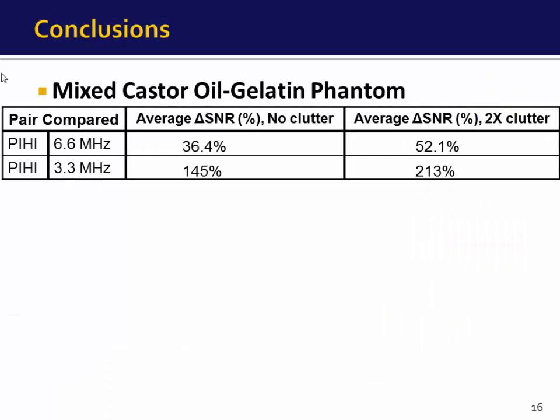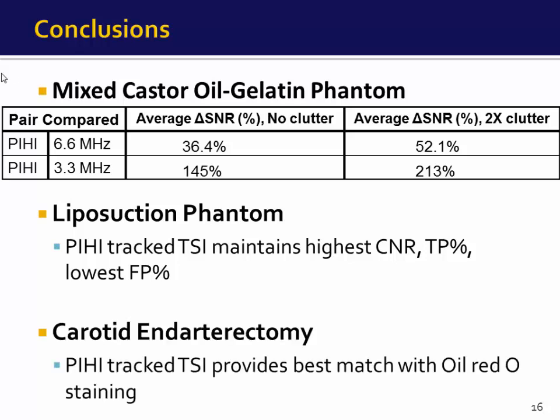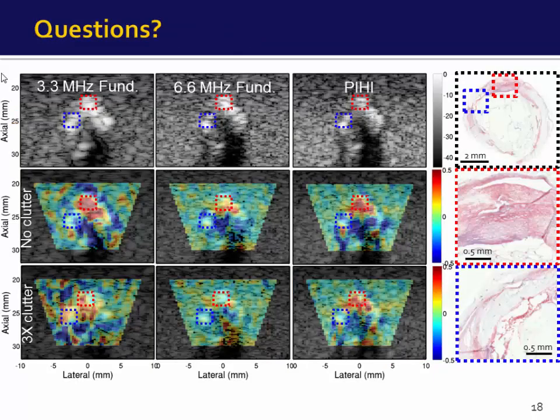In summary, for the castor oil and gelatin phantom, pulse inversion tracking improved SNR and this advantage grew with the introduction of clutter. For the liposuction phantom, pulse inversion TSI maintained the highest contrast-to-noise ratio and true positive percentage, and the lowest false positive percentage. For the carotid endarterectomy sample, pulse inversion TSI provided the best match with oil red O staining. I'd like to thank everyone from my lab, the Center for Ultrasound Molecular Imaging and Therapeutics, and our funding sources.